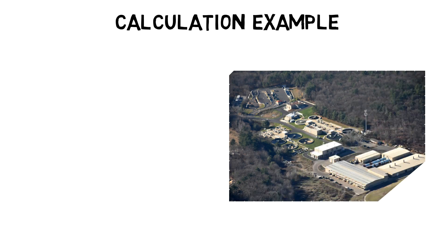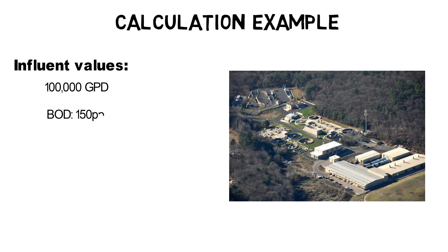As an example, let's assume we have an average day peak month flow of 100,000 GPD, 150 ppm BOD and 40 ppm ammonium in the influent of a wastewater treatment plant.